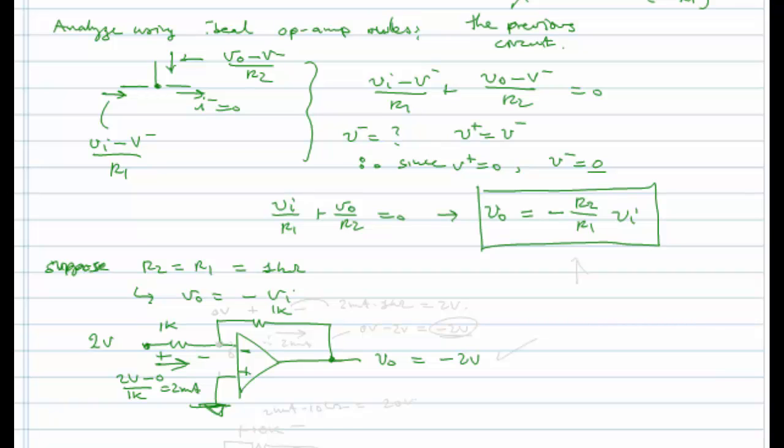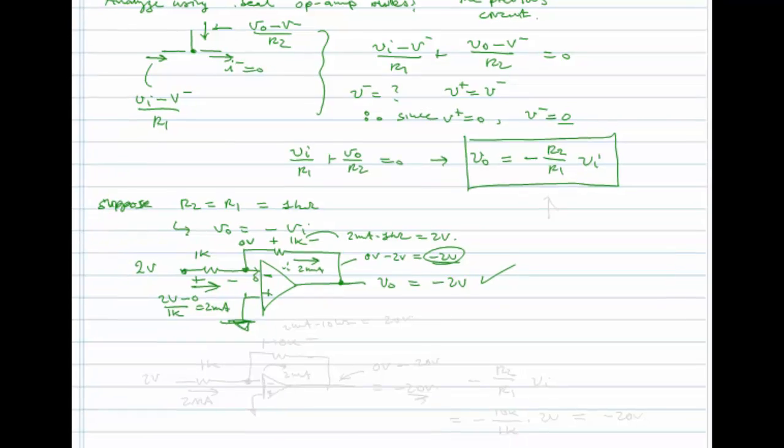That means, because I have 2 milliamps flowing in here, and because there's zero current flowing into V minus, that means therefore I must have 2 milliamps flowing here. The voltage drop across this resistor is going to be 2 milliamps times 1 kilohm equal to 2 volts. But I'm starting on the left side here at a potential of V minus, which is equal to V plus, which is equal to zero. So this is zero volts on this side. And if I'm dropping 2 volts across that resistor, that means over on this side I'm at zero volts minus 2 volts for a net of minus 2 volts, and this checks out.